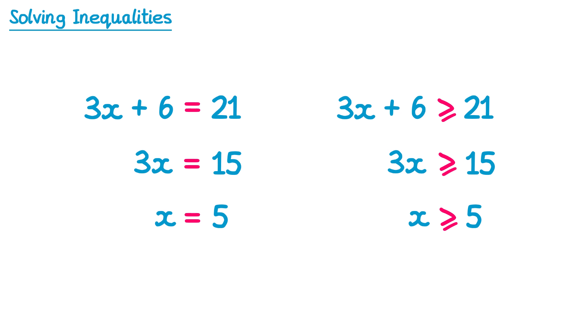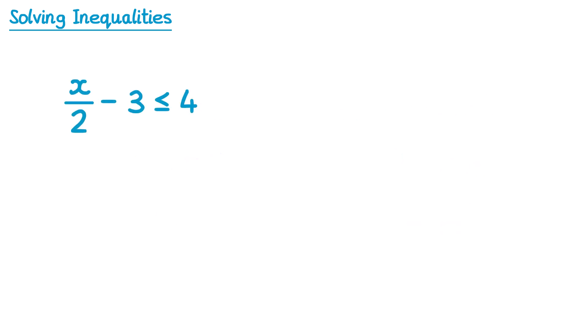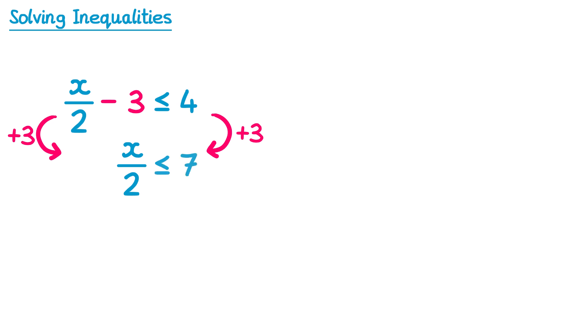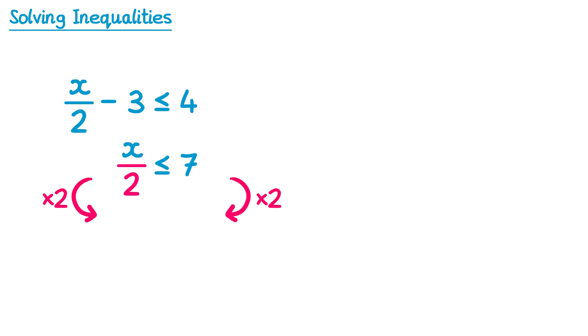Let's practice solving some more inequalities. For this inequality here we have a negative 3, so we're going to add 3 to both sides. On the left hand side the 3s will cancel, so we have x over 2, and on the right hand side 4 plus 3 is 7 — but we must make sure we write less than or equal to 7, using the inequality symbol and not an equal sign. Then we have this divide by 2, so we're going to multiply by 2 on both sides. On the left hand side the 2s will cancel, so we have x, and on the right hand side 7 multiplied by 2 is 14. So we have x is less than or equal to 14.